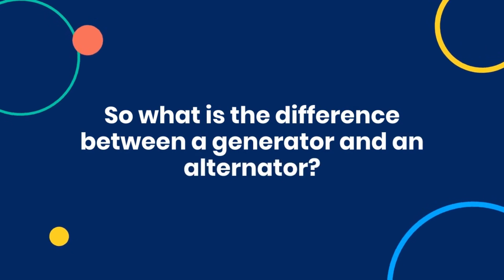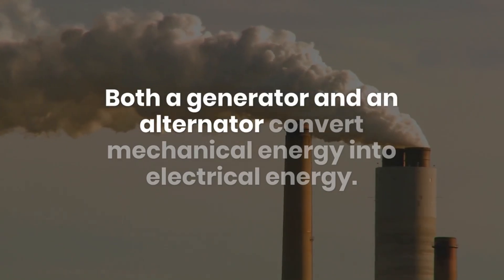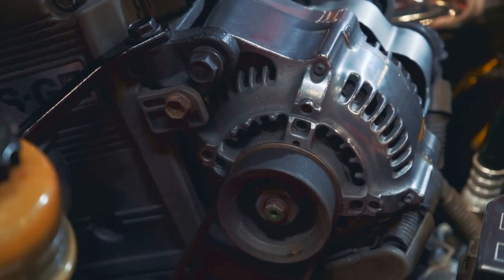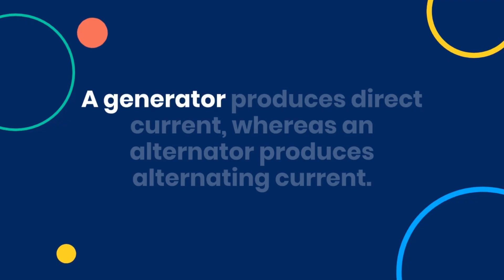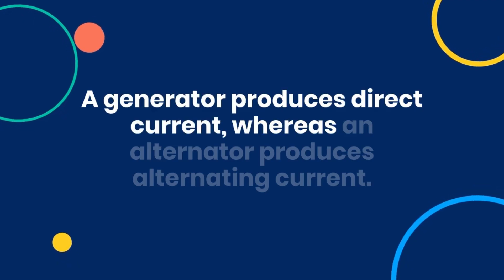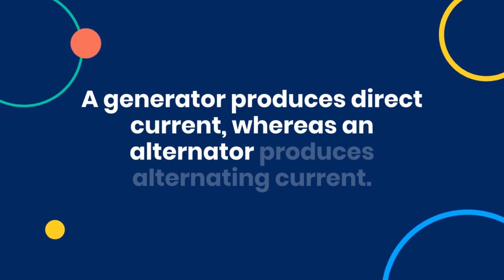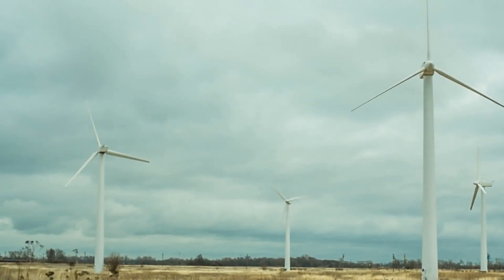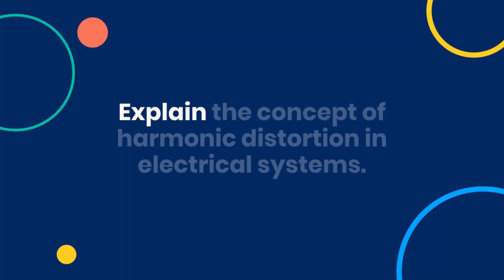What is the difference between a generator and an alternator? Both convert mechanical energy into electrical energy, but the key difference is that a generator produces direct current whereas an alternator produces alternating current. Alternators are more efficient and more commonly used in modern vehicles and power generation systems.